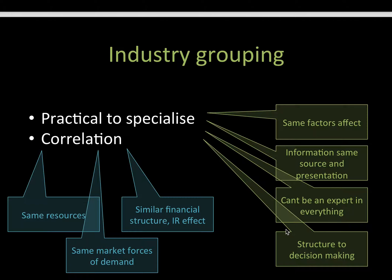The same factors are influencing all the companies within a sector — if there's an interest rate movement, all the financial companies are going to be affected. If there's a mining strike, then resource shares are going to be affected similarly. So by focusing on just one group, you can become an expert in just that area. It's quite difficult to become an expert in everything, and it also adds to the structure of your decision making. There is a lot of correlation between industries — they're all affected by the same resources, the same market forces of demand are acting on them, and there's a similar financial structure, so the interest rate effect applies across them.